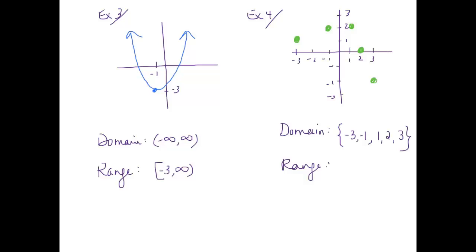For range, we're just going to list the y values. Again, I like to go in order. So we're going to say negative two. Then this point is at zero right here. And we have one. And then notice this one. Both of those points have a y value of two. We're just going to write it once. And our range is done.